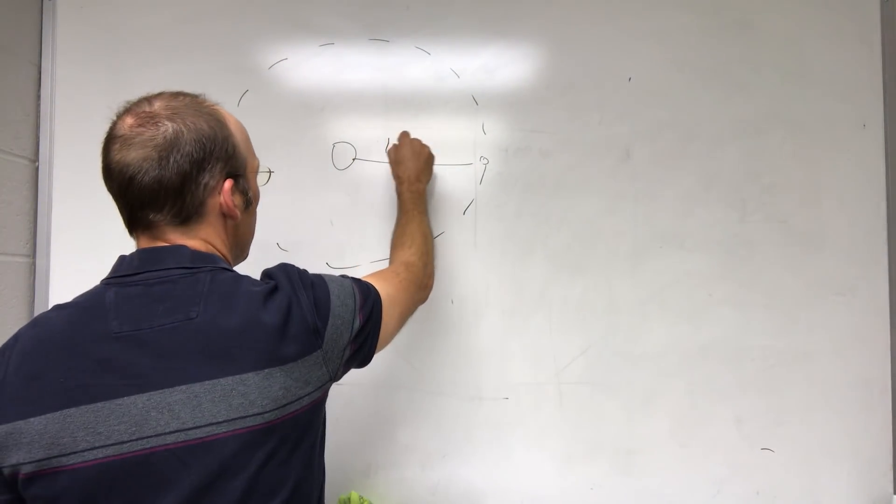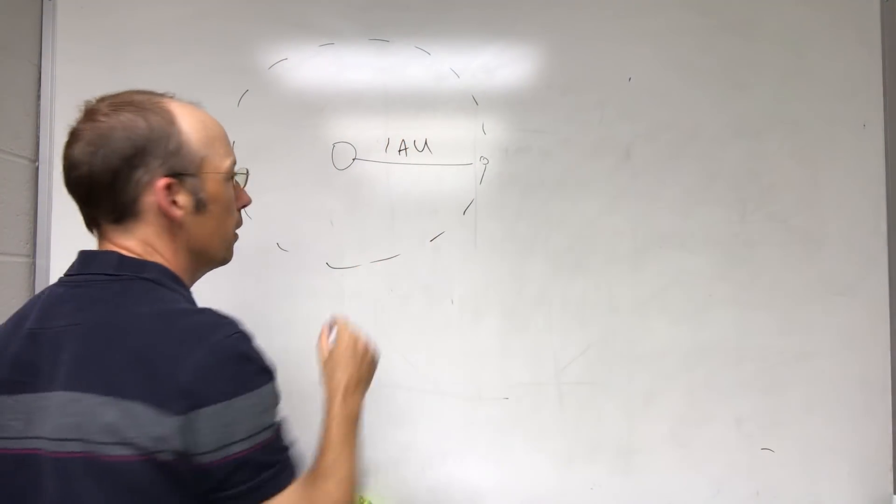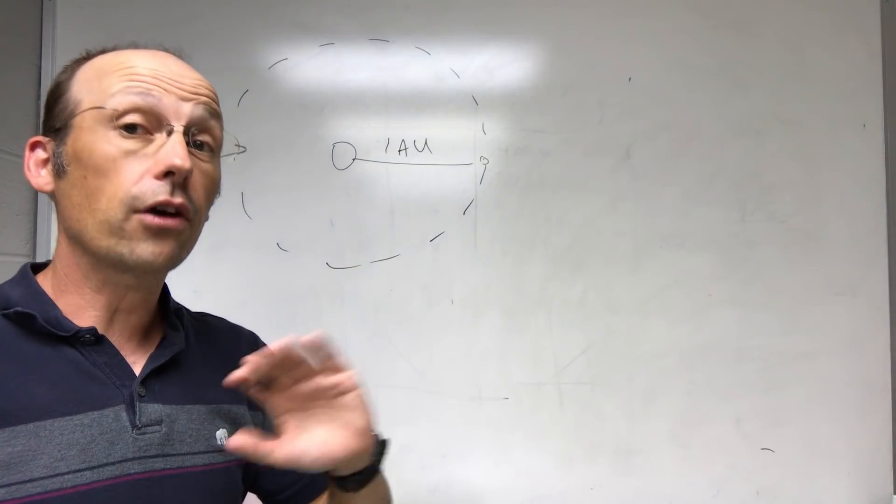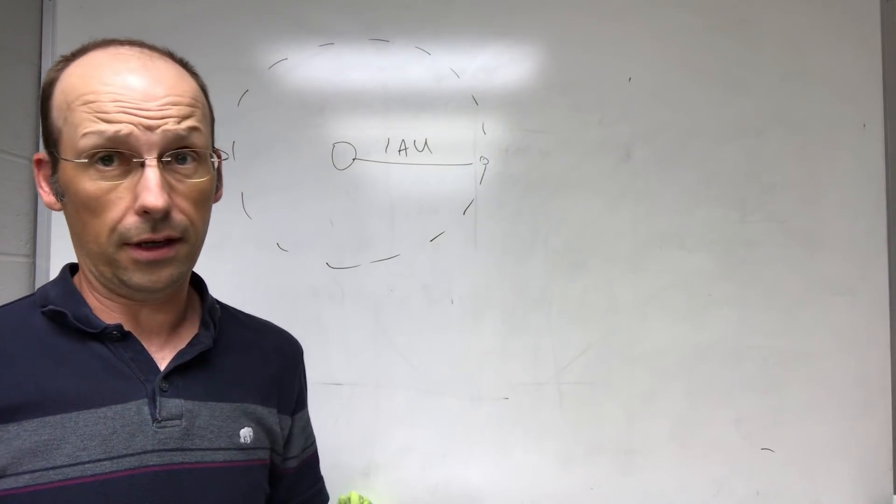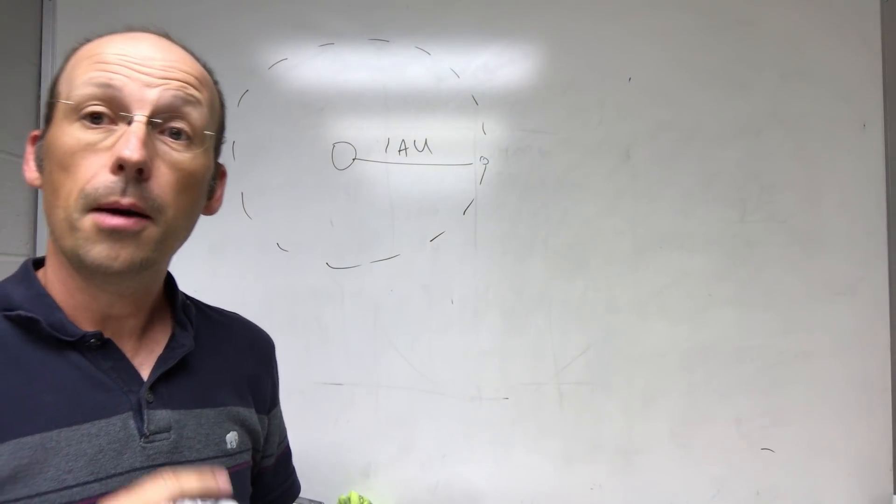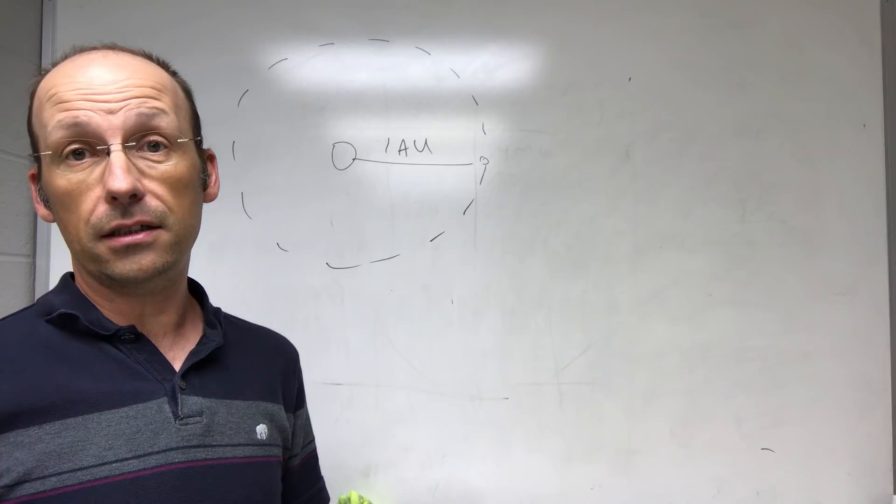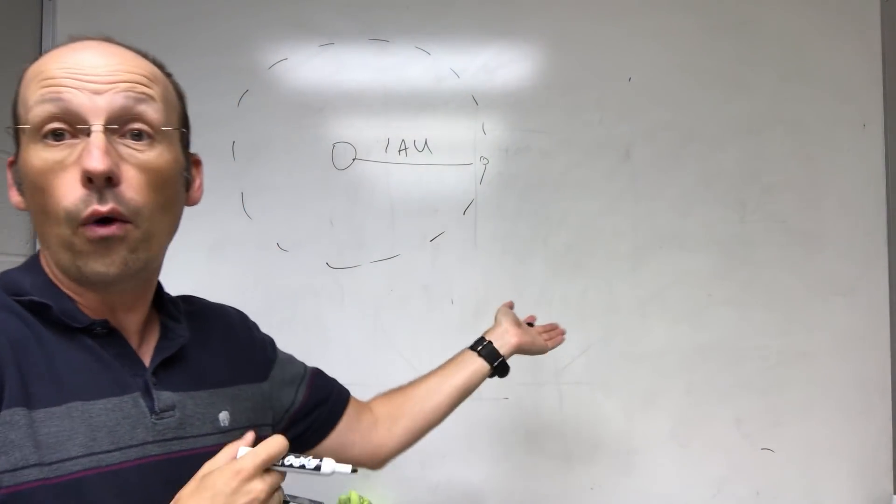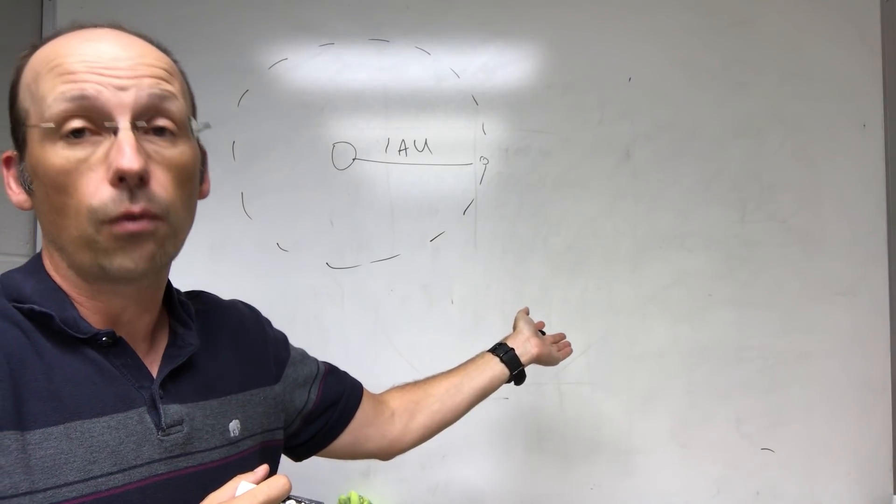So we call that unit 1 AU, the astronomical unit. And it's the distance from the Sun to the Earth. And we could go into how you find that, but I don't want to do that because I want to talk about the other ones. But once you do find that distance from the Earth to the Sun, then you don't have to recalculate the distance to Jupiter or Mars. You just say, oh, and now I know the conversion unit for 1 AU.